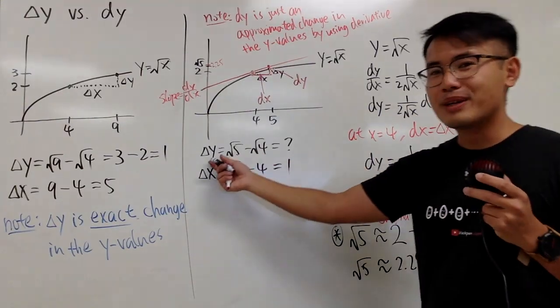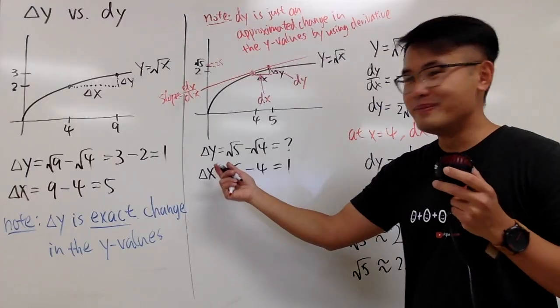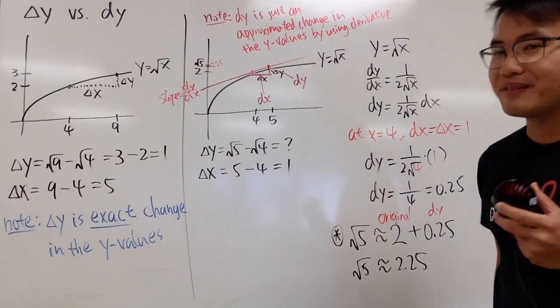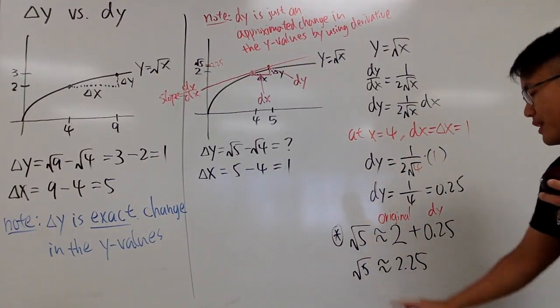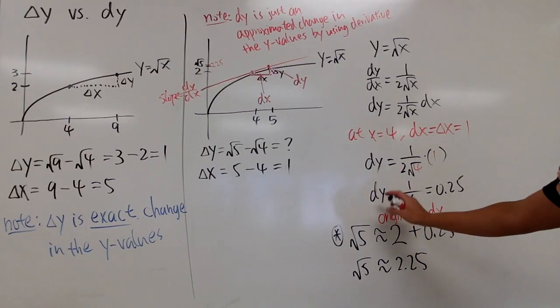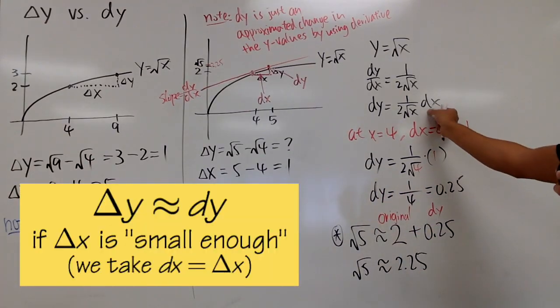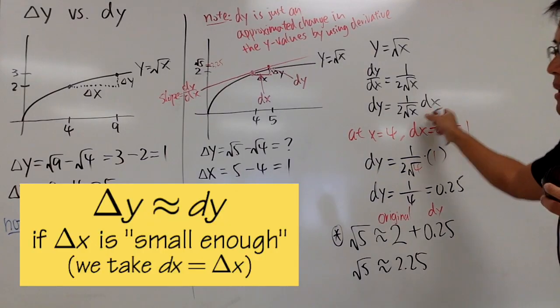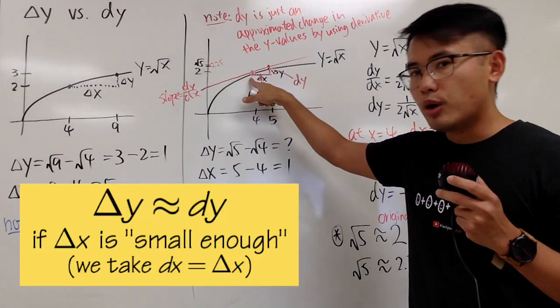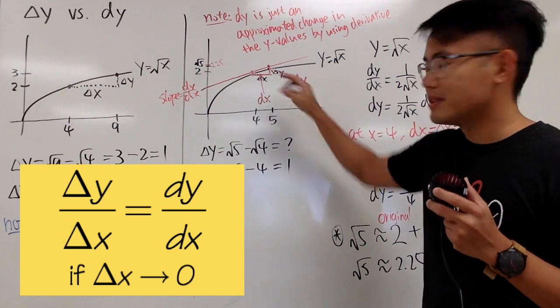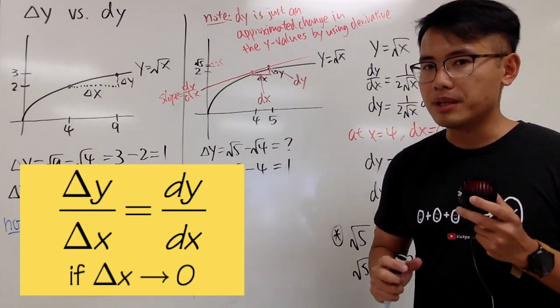And you see, earlier I couldn't get delta y because I cannot do square root of 5. But it's okay, because with this I can figure out dy, and this is actually a pretty good approximation. The dx cannot be too big, meaning the distance between the original point and the new point, the difference between the x values cannot be too big.